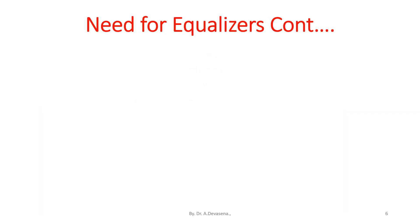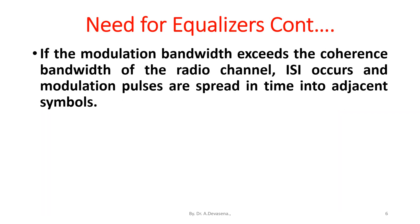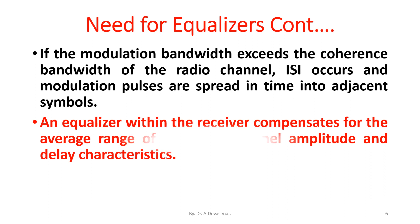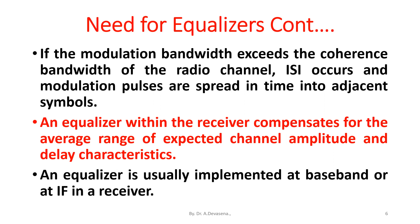If the modulation bandwidth exceeds the coherence bandwidth of the radio channel, ISI occurs and modulation pulses are spread in time into adjacent symbols. An equalizer within the receiver compensates for the average range of expected channel amplitude and delay characteristics. An equalizer is usually implemented at the baseband or at intermediate frequency in a receiver.